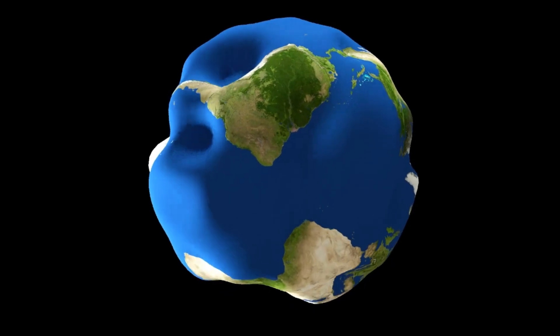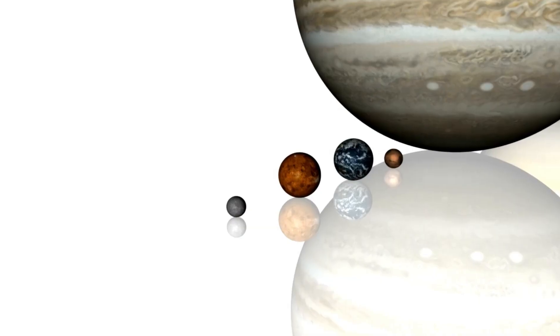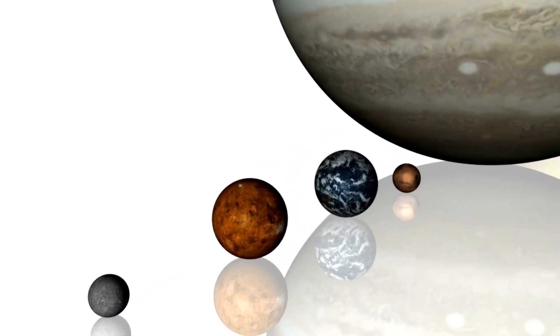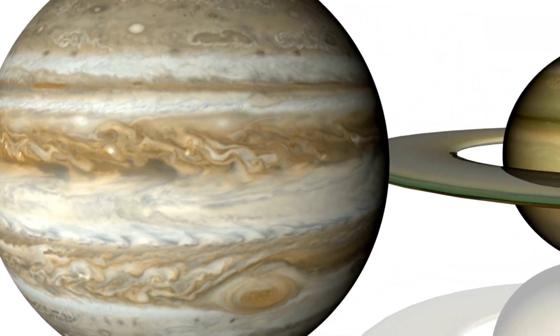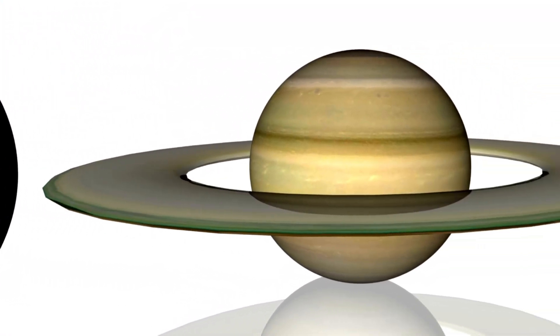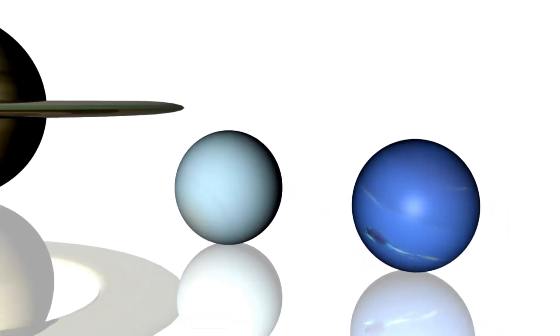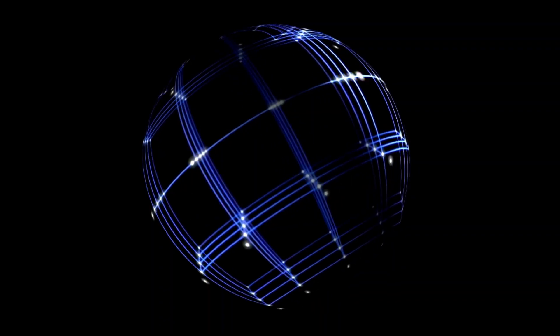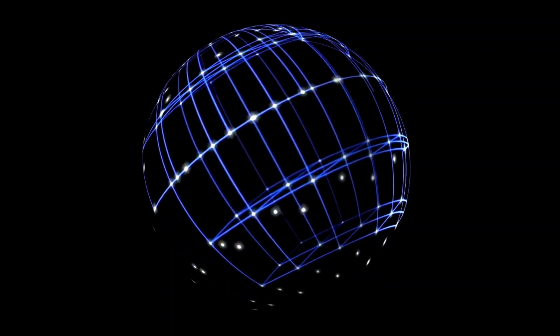This super-Earth, about 8.6 times the mass of our own planet, occupies a unique category of exoplanets that fall between the size of Earth and Neptune, a planetary class that is conspicuously absent from our own solar system. That uniqueness alone makes K2-18b an object of considerable interest.